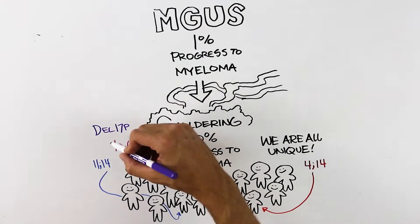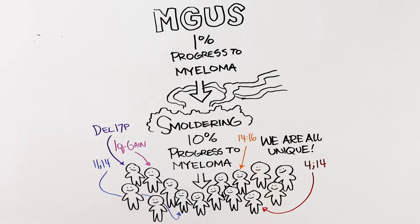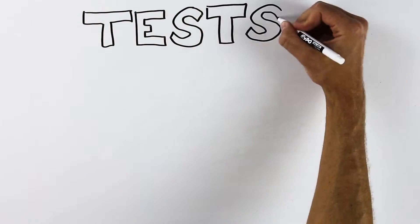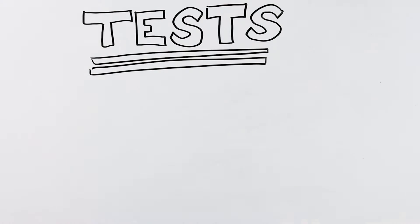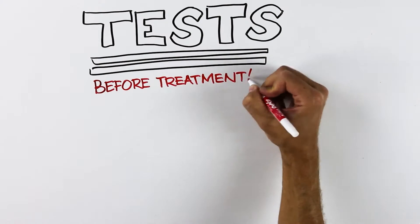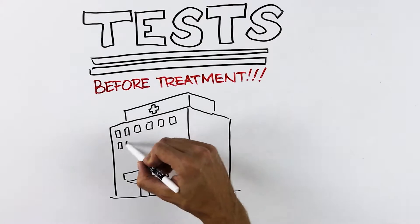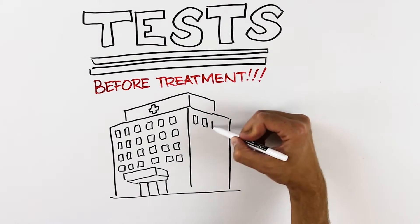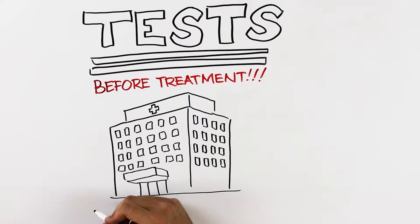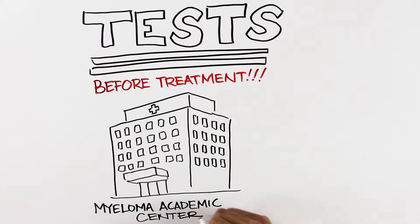Additionally, the genetics of myeloma can change and become more aggressive over time. Getting the right tests at the beginning of diagnosis is absolutely critical, because once treatment starts, the treatment kills the myeloma cells where these features reside. And to fight the enemy, you need to know as much about it as possible. A myeloma academic center is a great place to do your initial testing.